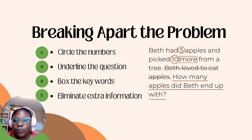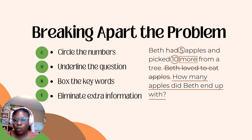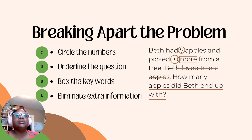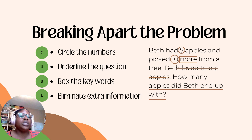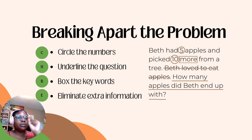Now we're going to move on to U — underline the question. Remember, questions end with a question mark. So we're going to search through the word problem, and there it is: 'How many apples did Beth end up with?' Then let's move on to B — we're going to box the key words. The key word in this question is 'more.'